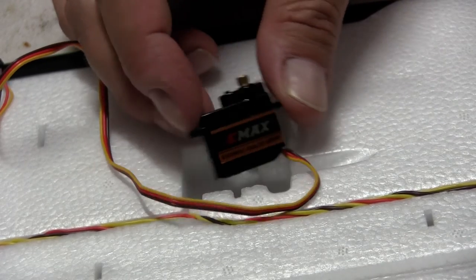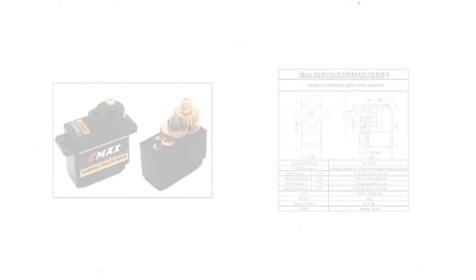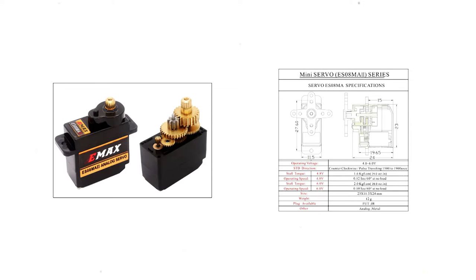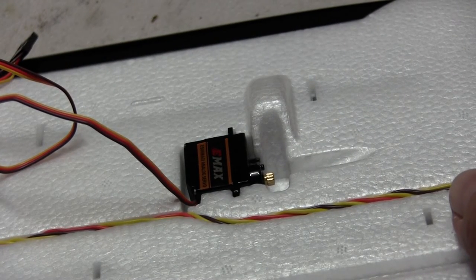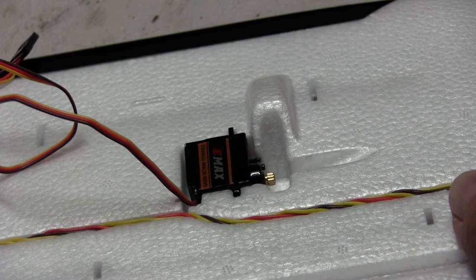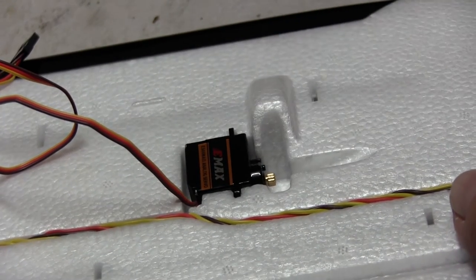Right so my servos finally came in. These are analog EMAX ES08MA2s. So we're going to fit them. I've got four of them. It took a long time to come from Banggood due to shipping issues and lost mail. I've got to fit two of them in each wing and then two in the V-tail.